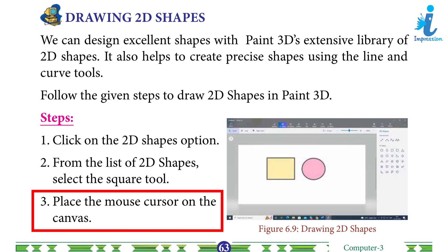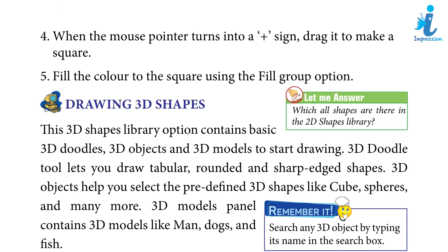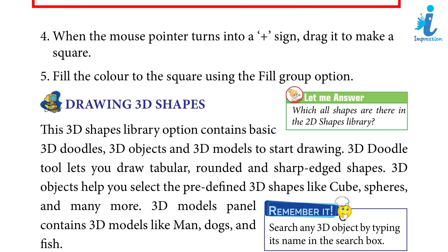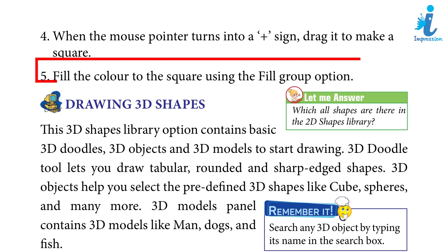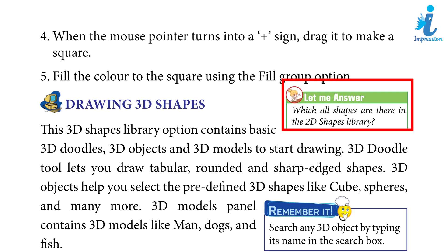Step 3: Place the mouse cursor on the canvas. Step 4: When the mouse pointer turns into a plus sign, drag it to make a square. Step 5: Fill the color to the square using the Fill Group option. Let me answer: which shapes are there in the 2D shapes library?